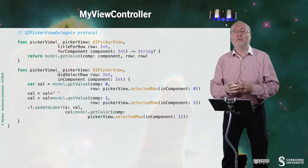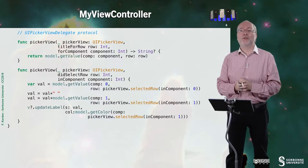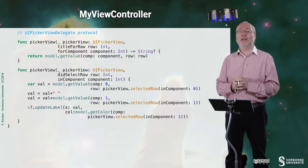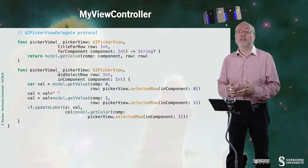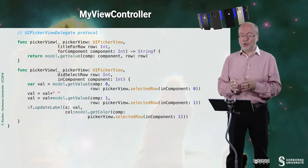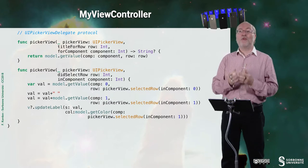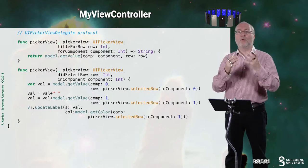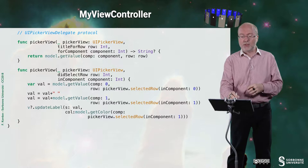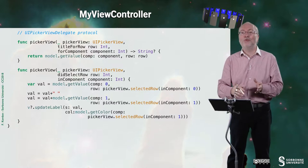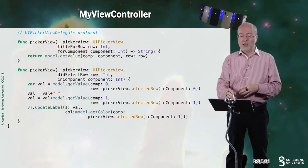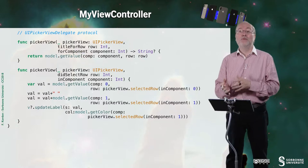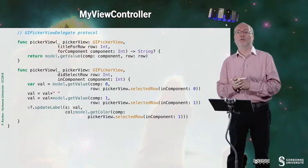And now I have to catch the UIPickerViewDelegate protocol. So the first thing I have to do is just to provide the title for a given item in a given component, or a row in a component. And so I request this information to the model. So I call the getValue method of my model to do so.